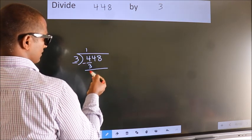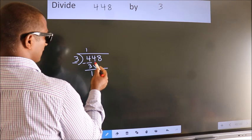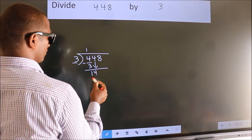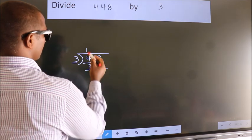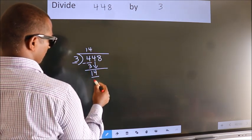After this, bring down the beside number. So, 4 down. So, 14. A number close to 14 in 3 table is 3 4s 12.